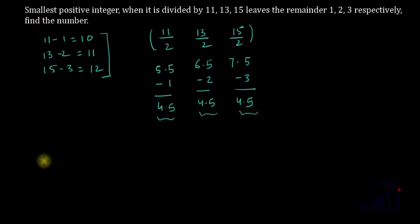So the number which we are talking about will actually be the LCM of 11 by 2, 13 by 2, 15 by 2, minus 4.5, because now the difference between the divisor and the remainder is constant, which is 4.5 in each case.